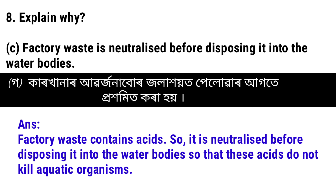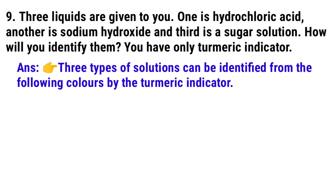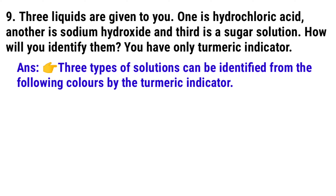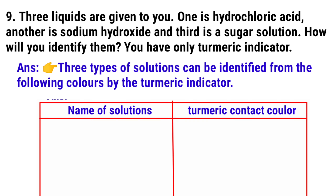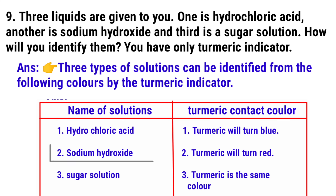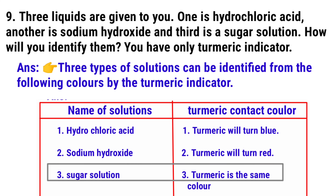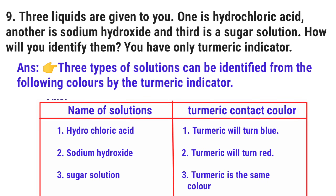Next, question number 9: Three liquids are given to you — one is hydrochloric acid, another is sodium hydroxide, and the third is sugar solution. How will you identify them if you have only turmeric as an indicator? Three types of solution can be identified by the following colors using turmeric indicator: Number 1 — hydrochloric acid: turmeric will turn blue. Number 2 — sodium hydroxide: turmeric will turn red. Sugar solution: turmeric remains the same color.